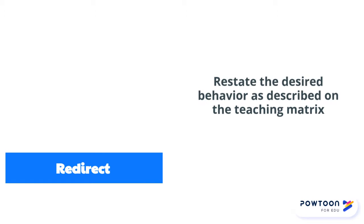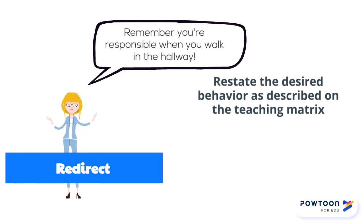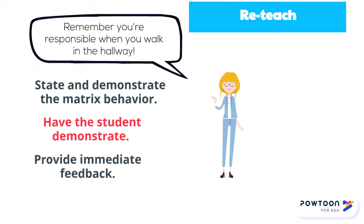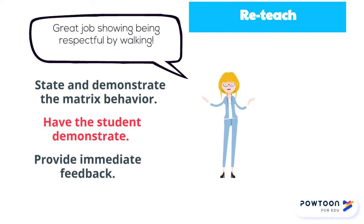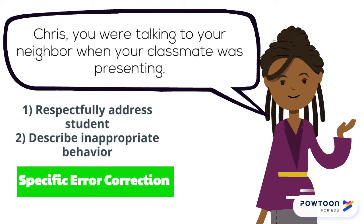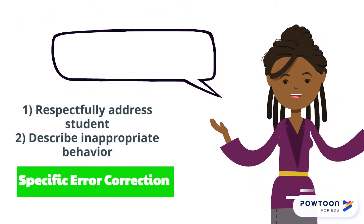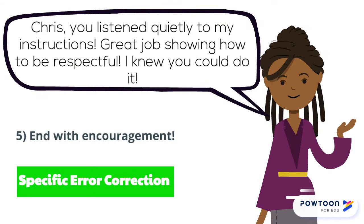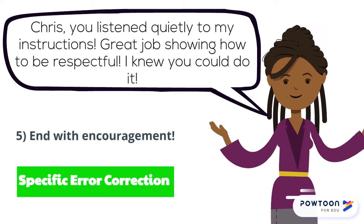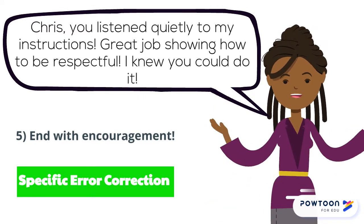When you reteach, you state the expected behavior and demonstrate it, then have the student demonstrate it immediately, and provide feedback on their performance. In specific error correction, you respectfully address the student and describe their inappropriate behavior. You then describe the expected behavior and tie it to school-wide expectations. Finally, you end with encouragement and specific praise as soon as the student carries out what you need them to do.